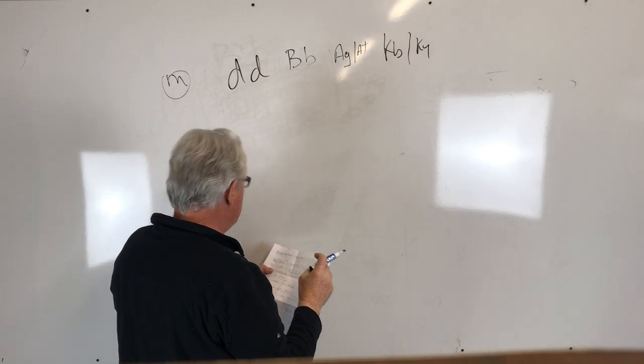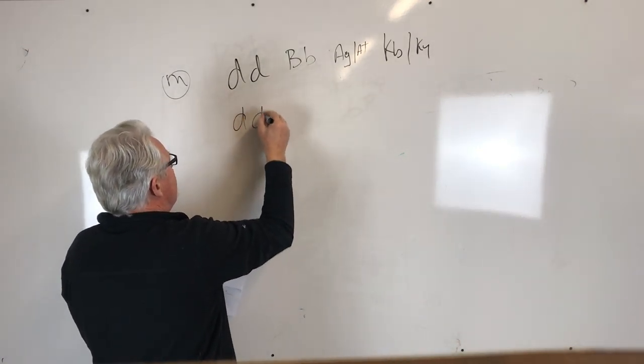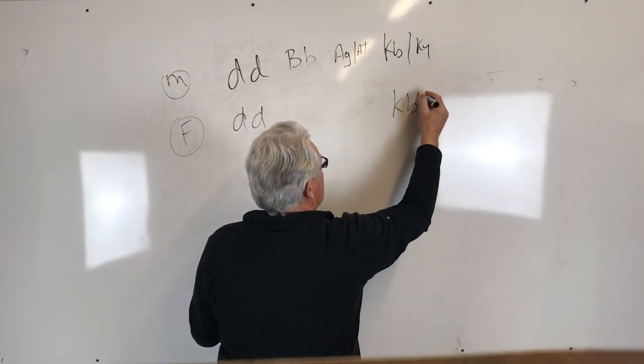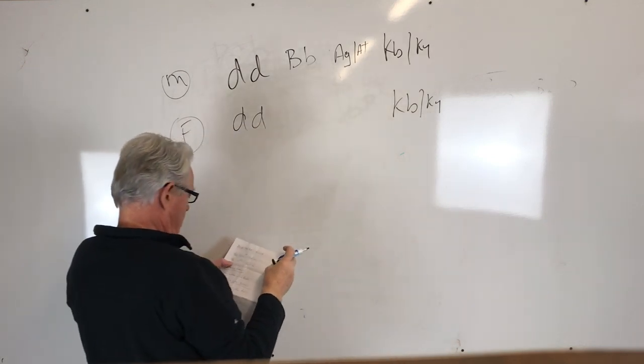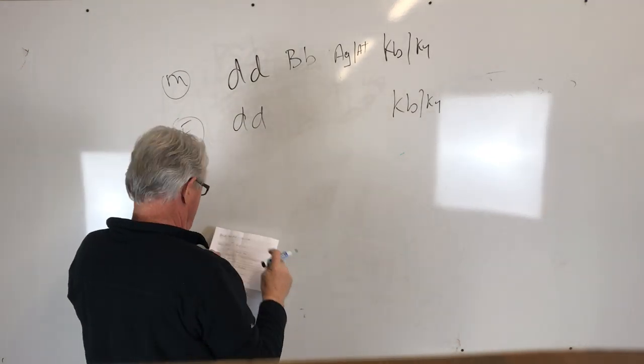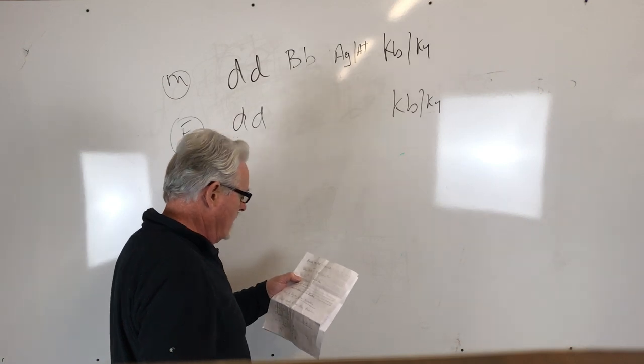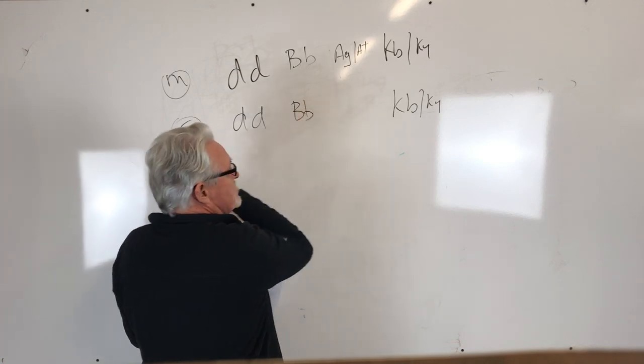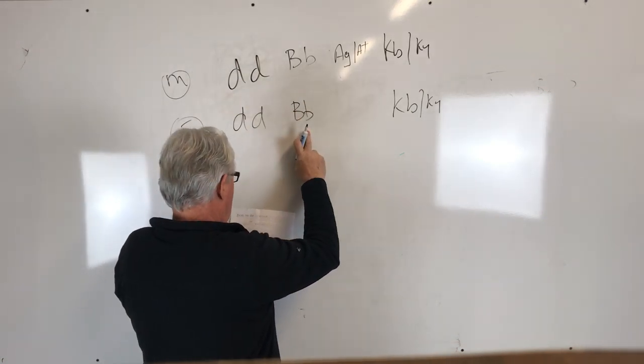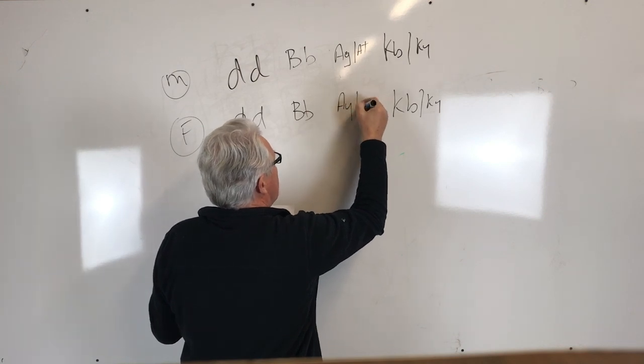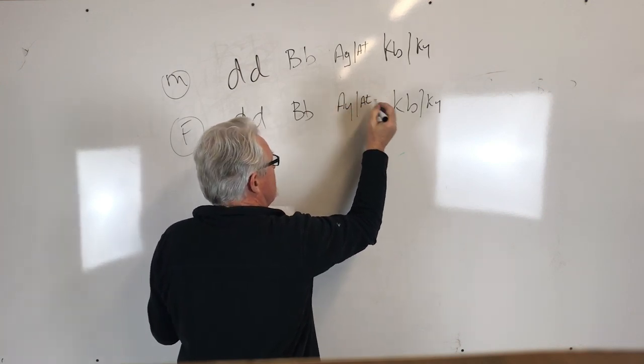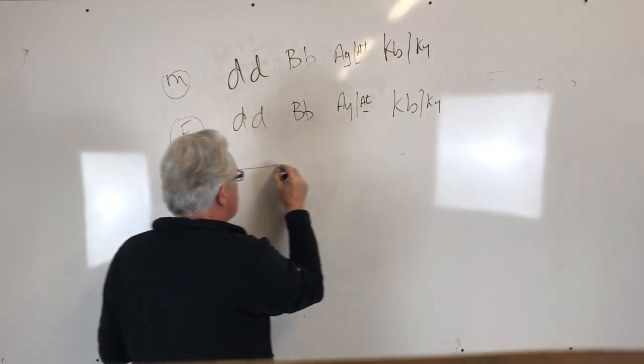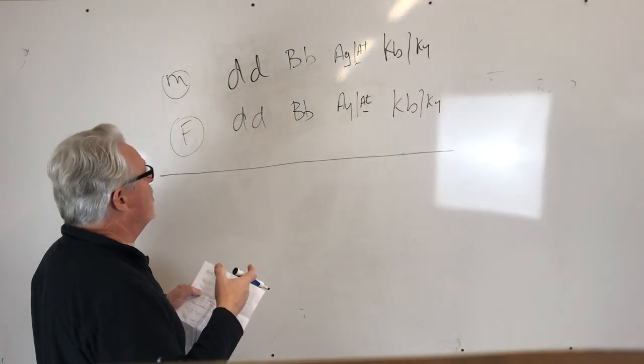Then she has a blue brindle female. She's made the statement that it has a chocolate and tan parent. So this dog also has to have inherited a copy of chocolate. And since it also has a tan parent, it has to have a copy of tan points, the AT tan points like over here. So the question is, what can we expect offspring-wise from those two dogs?